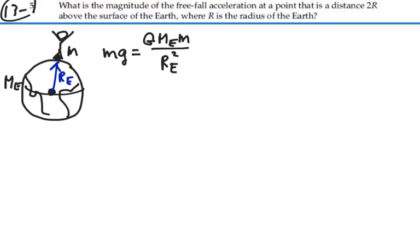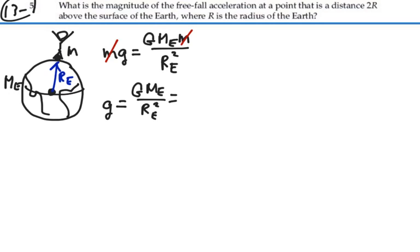If we describe it in this way, we can cancel little m on both sides, and we get that gravitational acceleration g equals big G times the mass of the Earth over the radius of the Earth squared. The value of that, as we know, is 9.8 meters per second squared.